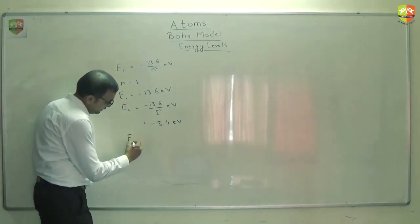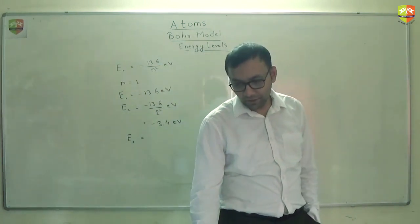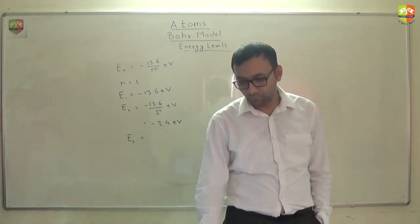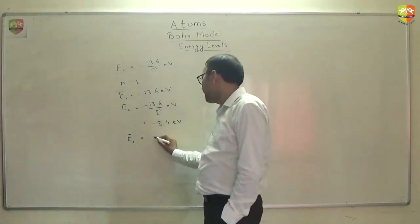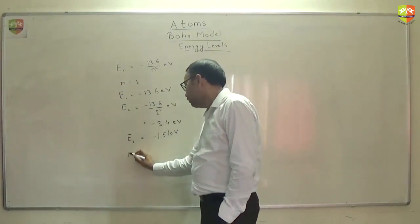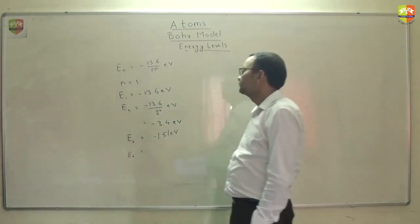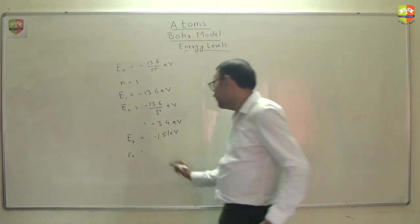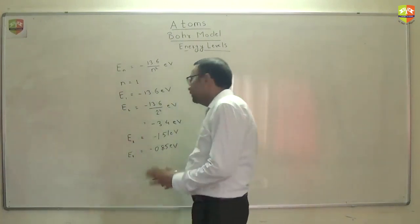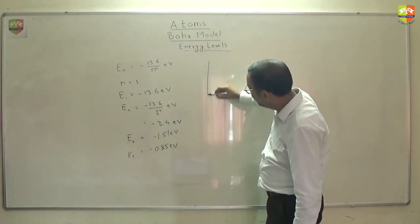Find out what is third energy level. How much it is? Minus 13.6 divided by 3 square. Approximately 1.5 electron volt. E4 you will get minus of 0.85 electron volt. Like this you will get. So if you draw energy level diagram.